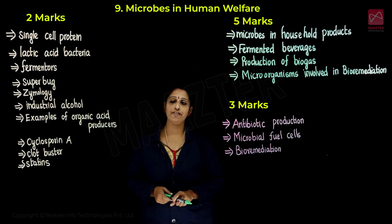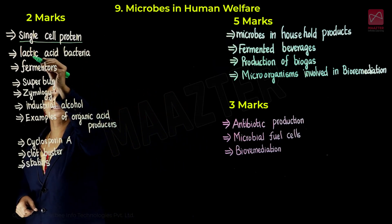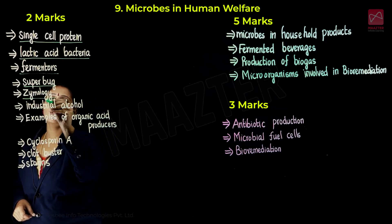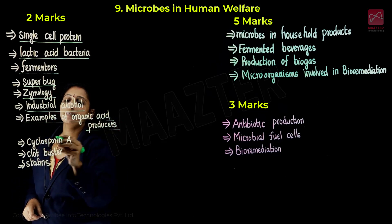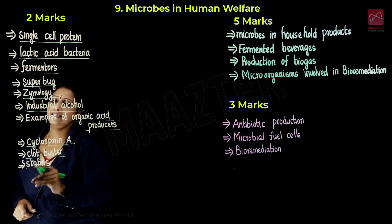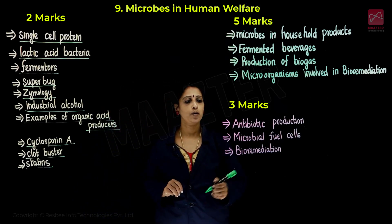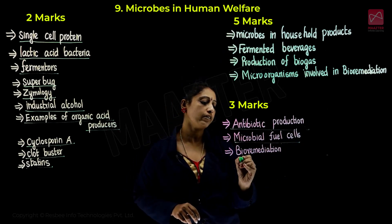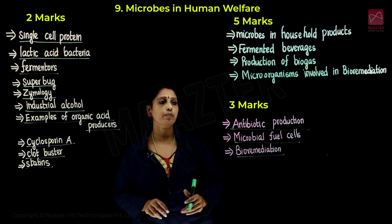Next chapter: Microbes in Human Welfare. Important one-mark topics include Single Cell Protein, Lactic Acid Bacteria, fermenters, Superbug, zymology, industrial alcohol, examples of organic acids, producers, Cyclosporine A, Clobusters, and Statins. Two more questions, then three more questions on antibiotic production, microbial fuel cells, and bioremediation — both in-situ and ex-situ.